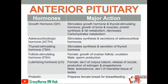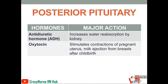Next, we have your luteinizing hormone. In females, it is responsible for the development of the corpus luteum, release of oocyte, and production of estrogen and progesterone. In males, it is responsible for testosterone and development of interstitial tissue of testes. Lastly, we have prolactin, which prepares the female breast for breastfeeding. Next, the posterior pituitary gland has antidiuretic hormone, which is responsible for increasing water reabsorption by the kidney. Next is oxytocin, which stimulates contraction of the pregnant uterus and is responsible for milk ejection from the breast after childbirth.